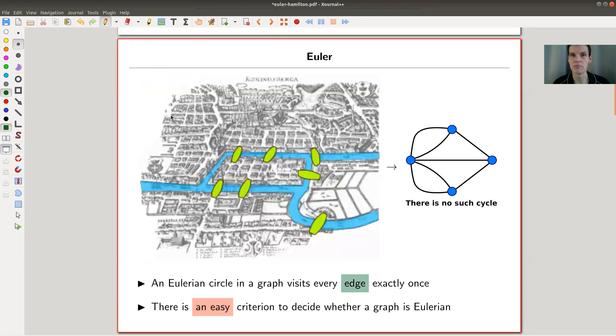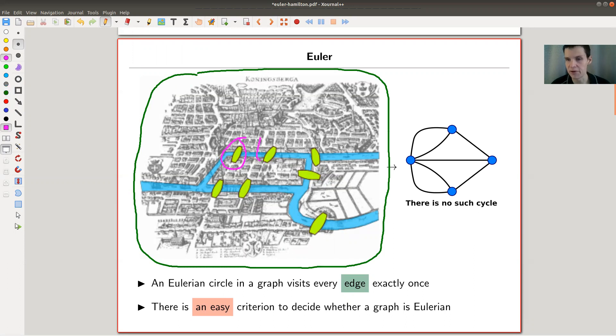The classical problem goes back to this puzzle people asked a long time ago in Königsberg. Here's a map of Königsberg around the time Euler was there. Königsberg had seven bridges - those greenish things here, one, two, three, four, five, six, seven. People wondered whether you can actually walk through Königsberg passing each bridge exactly once.